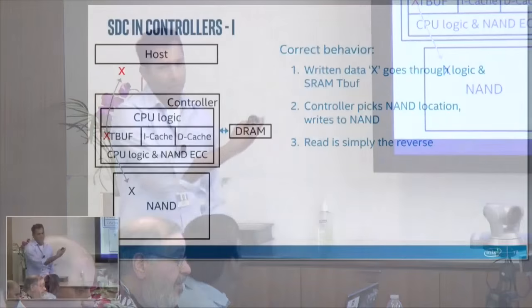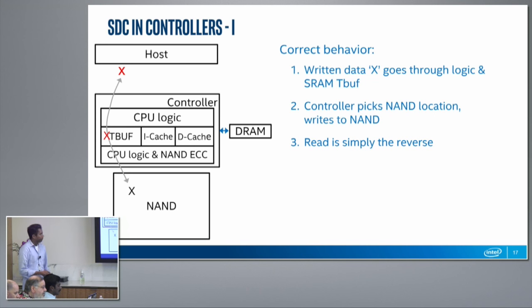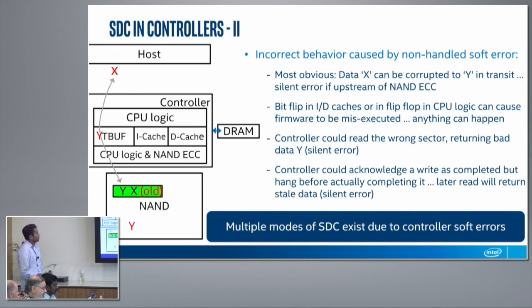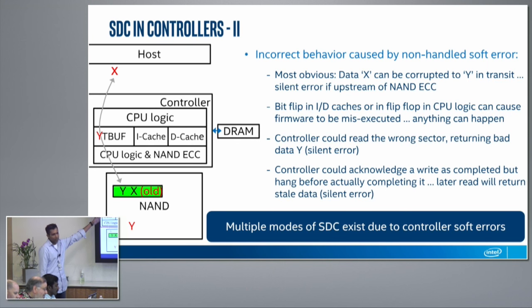This is typically what happens when everything goes well: the host writes some data, it goes to the transfer buffer, makes it to the NAND media, and the read is simply the reverse. But if things don't go right and you have a bit flip occurring somewhere — whether in the data path or the control logic — you can have many different issues. The most obvious is data comes in, gets to the transfer buffer, a bit flips there, and the wrong data gets written to the NAND media.